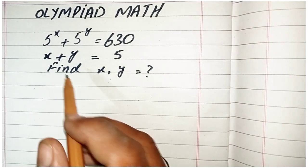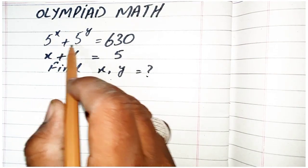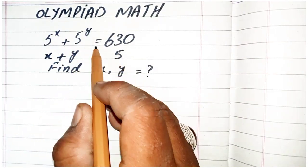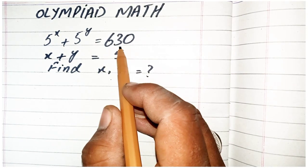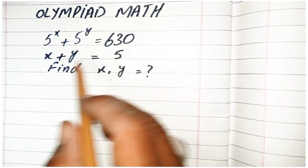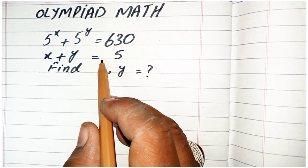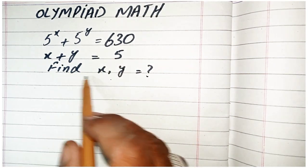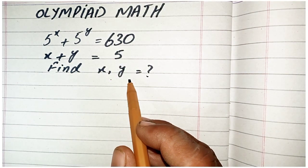Hello math lovers. Our topic is: 5 power x plus 5 power y is equal to 630. If x plus y is equal to 5, find the value of x and y.